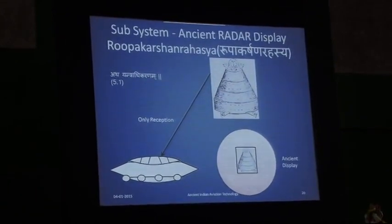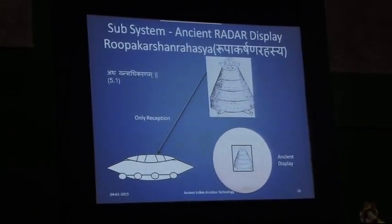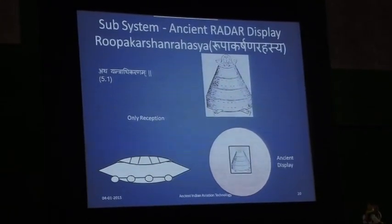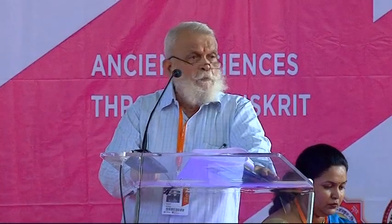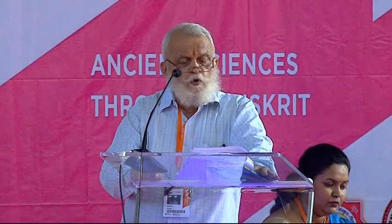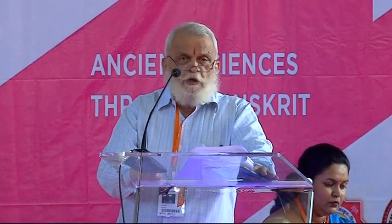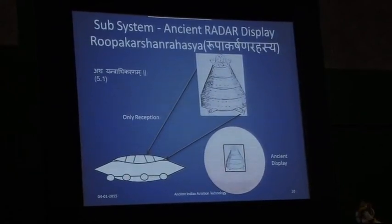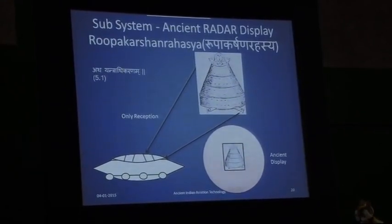In ancient India, the radar system was called the Rupakarshana system. The first and foremost difference: in today's radar, only a blip — a small point — indicates an aeroplane. Whereas in the ancient Indian Rupakarshana system, on the radarscope in the cockpit or radar center, the actual shape of the aeroplane was presented to the observer.